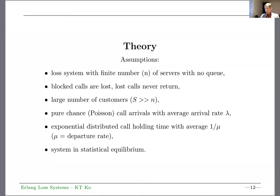Let's get back to the slides and go through the assumptions and theory. We're looking at a loss system with finite number of servers N, with no queue. The assumptions are: blocked calls are lost and never return; large number of customers much greater than servers; Poisson arrivals; exponential service time; and the system is in equilibrium.